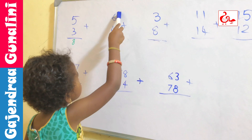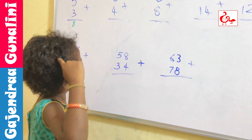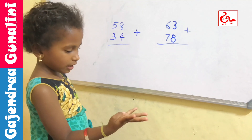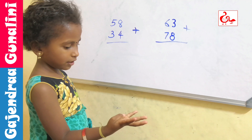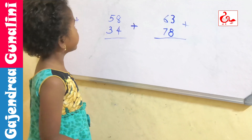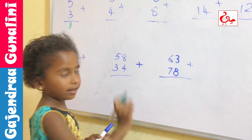6 plus 4. 6 in the mind, 4 in the finger. 6 after: 7, 8, 9, 10. We need to write 10.